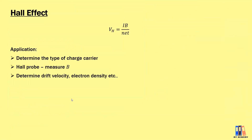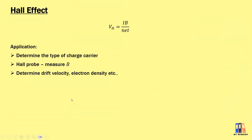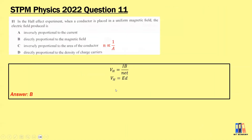Moving on to the Hall effect topic. There are a few parameters that may be confusing, like thickness and width, so revise the parameters carefully. One key formula is VH equals IB over nET, where T is the thickness. The Hall effect can be used to determine the type of charge carrier, measure the magnetic field, determine drift velocity, and find electron density.